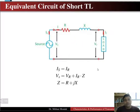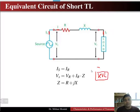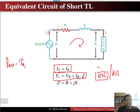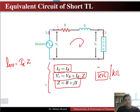Writing the KVL equation for this loop, the sending end voltage is equal to the receiving end voltage plus the voltage drop in the line, which is IR times Z. The total impedance Z is equal to R plus jX. These equations are used for determining any short transmission line.